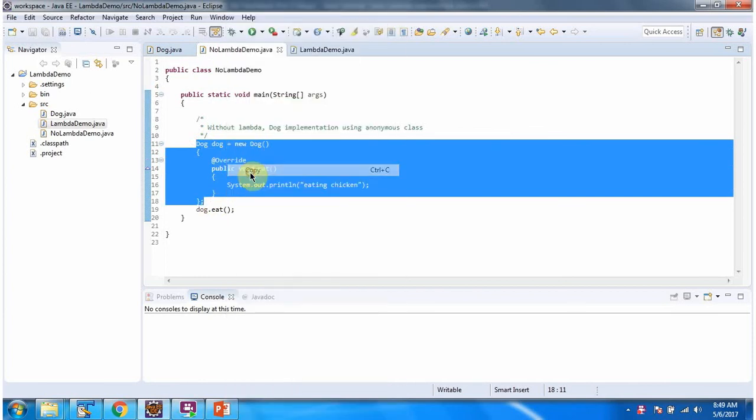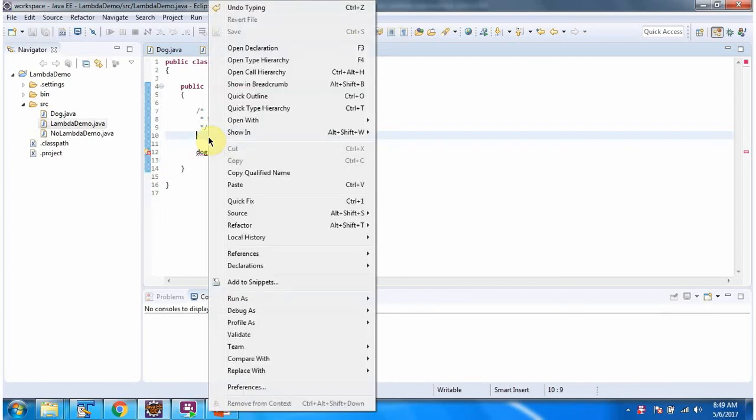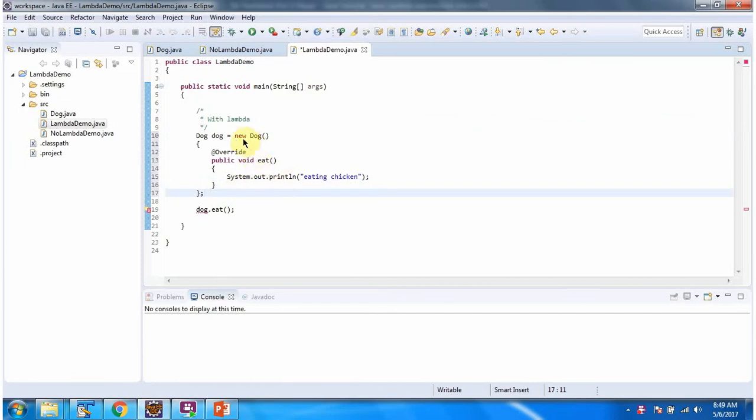Copy this, paste it here. Remove up to this, then remove this, and remove this. And this is how we can provide implementation of dog interface with Lambda.